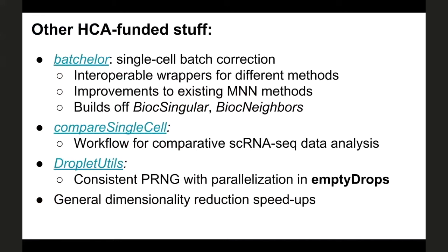I also get paid by other HCA funding sources, and given that I always do HCA Bioconductor related stuff, I'll talk about this as well. Batchelor is a package for single cell batch correction — Kevin came up with the name, which is pretty cool. The idea, much like with BiocSingular and BiocNeighbors, is to provide interoperable wrappers for different batch correction methods, allowing users to switch easily between methods to compare them on their data. It also improves some existing MNN methods and builds off the two packages I talked about earlier.